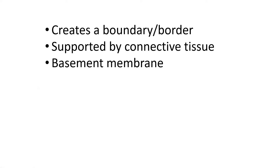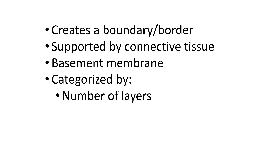When we identify epithelial tissue, we do it by two categories: how many layers there are — is there just one layer of cells all touching the basement membrane, or multiple layers — and the shape of the cell. By the shape of the cell, we mean the side of the cell, not the top of the cell.